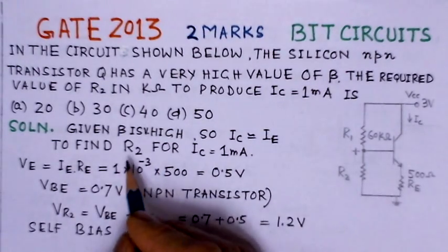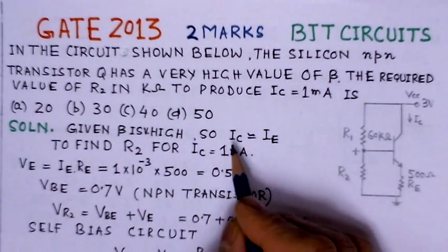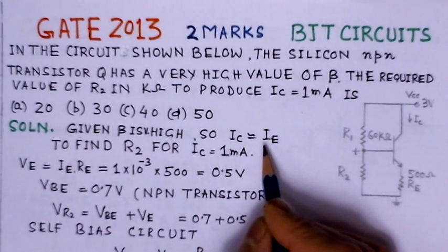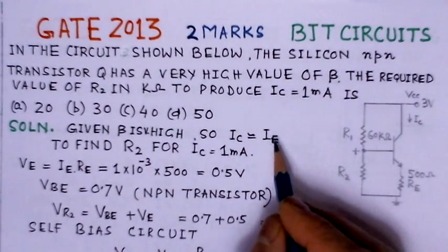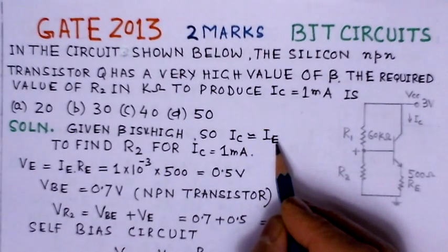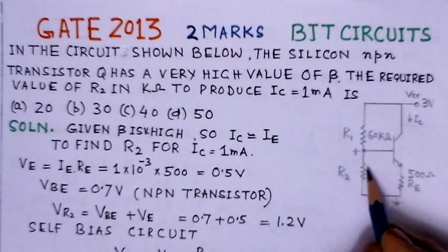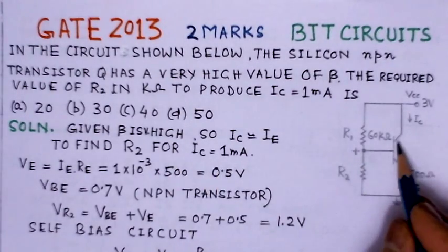And here, it is given that beta is very high, and when the beta is high, that means the collector current should be equal to emitter current and effectively the base current would be nearly zero. That is, IB is zero. And we have to find the value for R2, this resistor R2 here for IC of 1 milliampere.